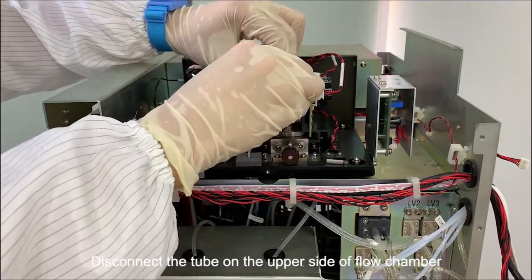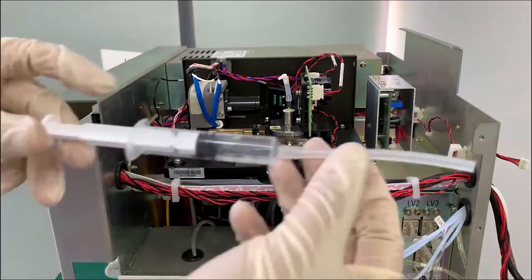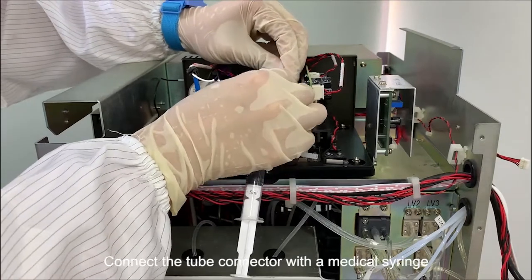Disconnect the tube on the upper side of flow chamber. Connect the tube connector with a medical syringe.